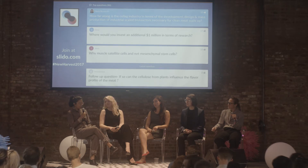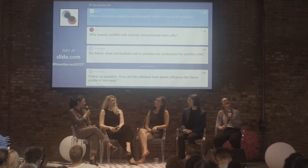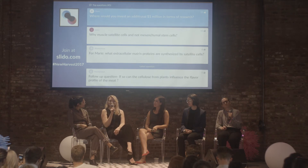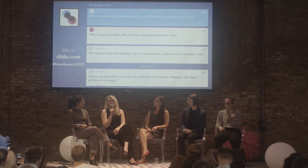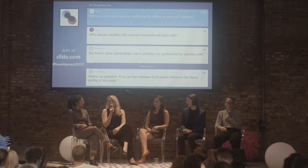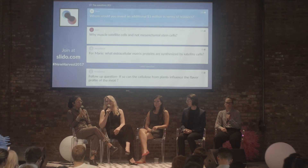For the last question, we'll ask every panelist where they would invest an additional one million dollars in research, starting with Marie. I would invest it in algae — we're going to need that not only for recyclability, but we can use it to feed ourselves, the cells can feed the algae, and we can use it to make scaffolding. It's really easy to grow in a controlled way. Specifically, I would address using algae to feed liver cells.